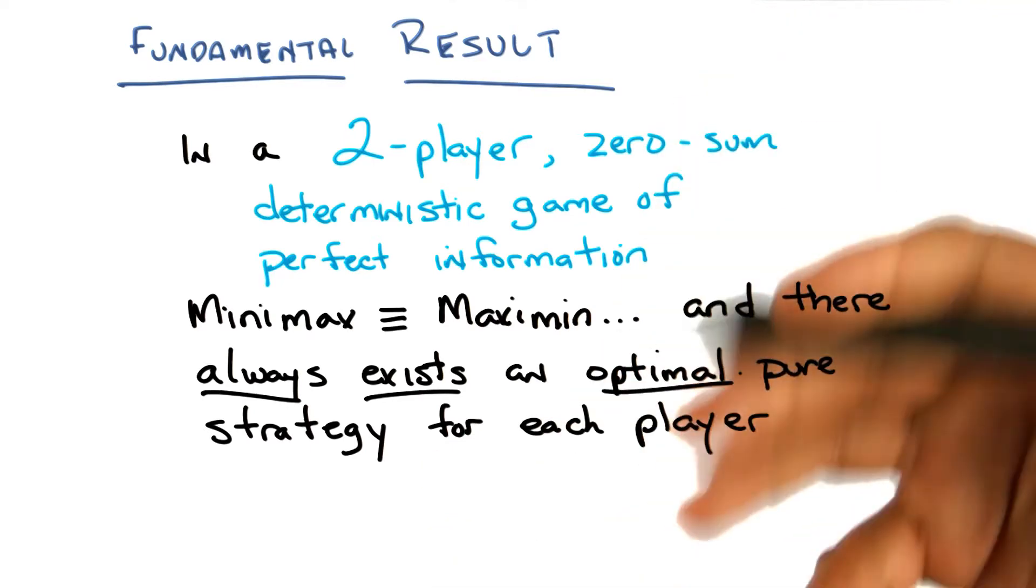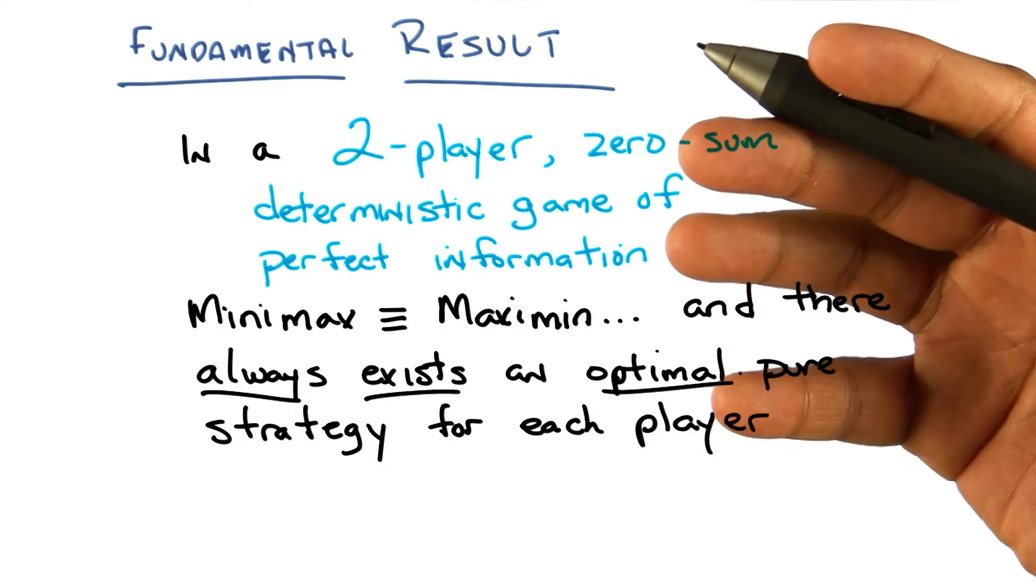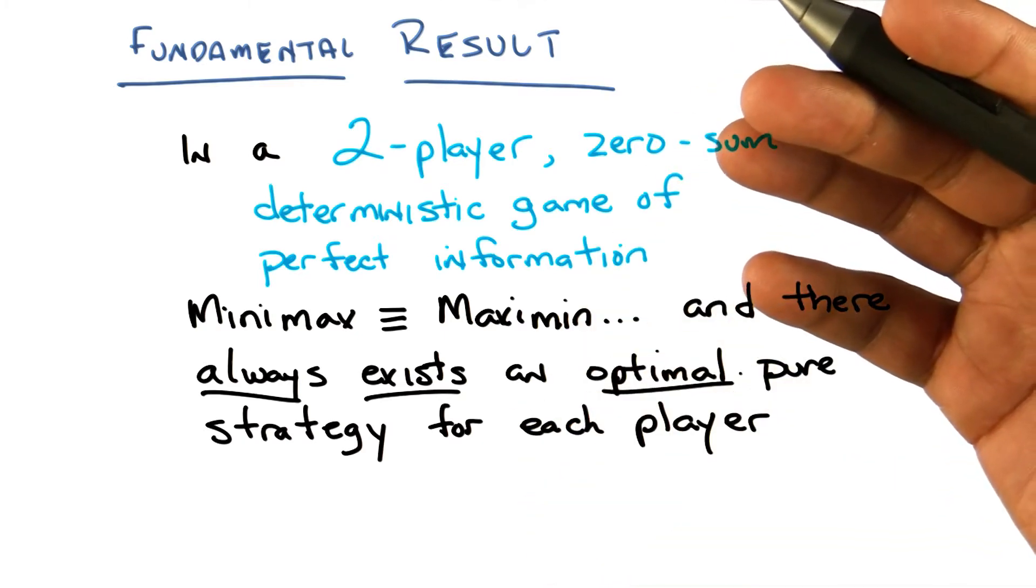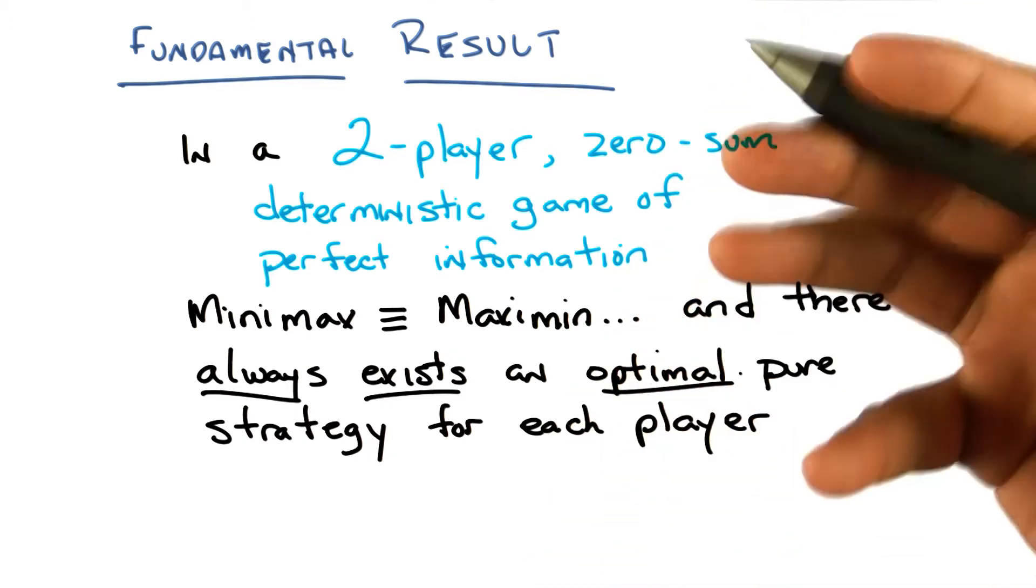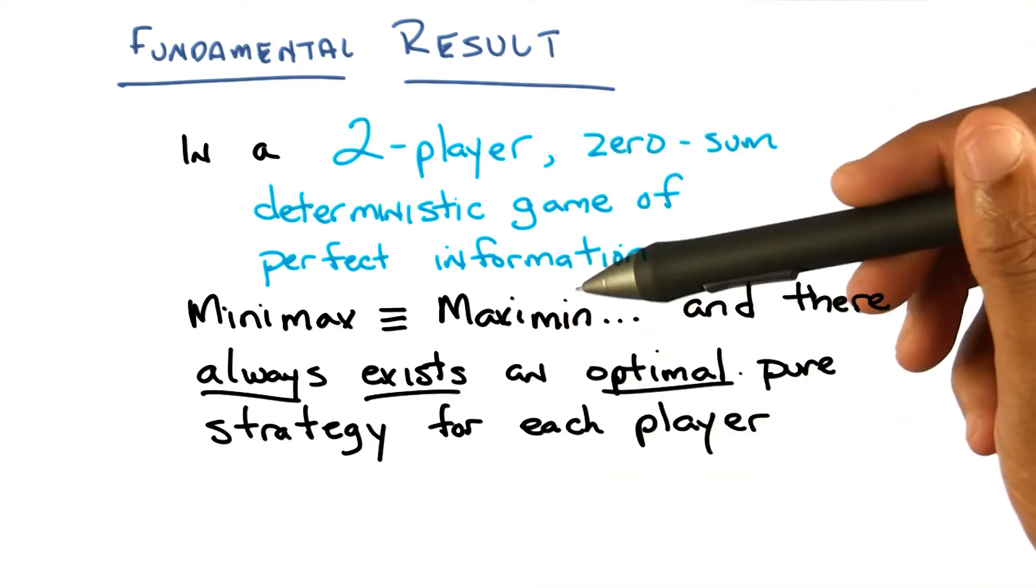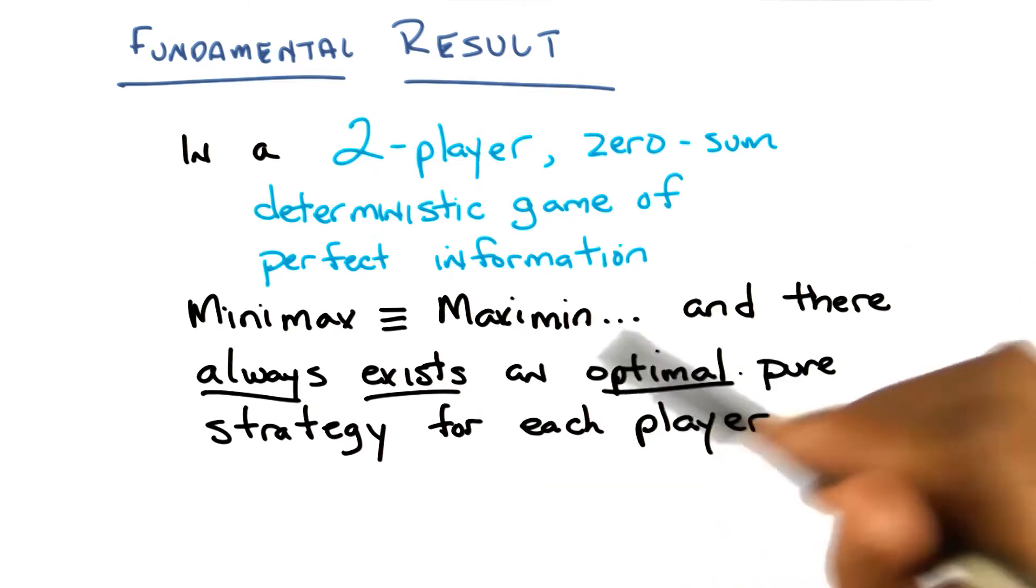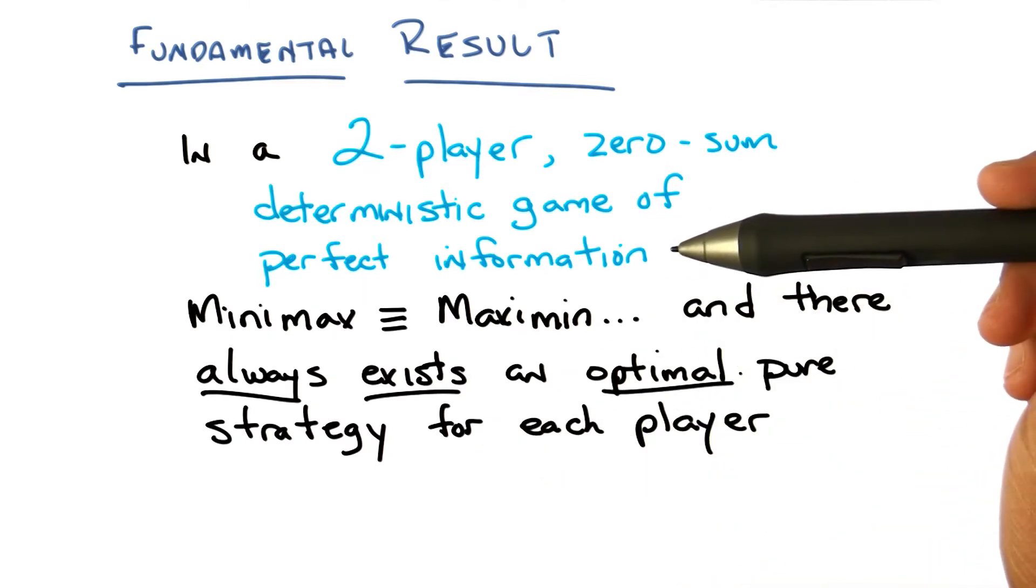So we define the reinforcement learning problem that way. My goal is to find a policy that maximizes my long-term expected reward. So I'm trying to get the best reward that I can. And what you're assuming here is that everyone else is doing the same thing, and they're assuming that everyone else is doing the same thing. Does that make sense?